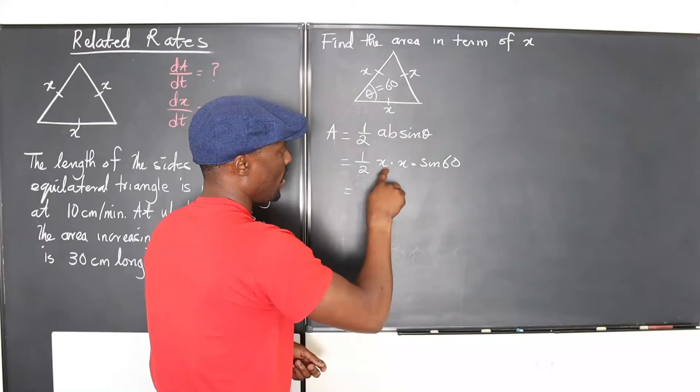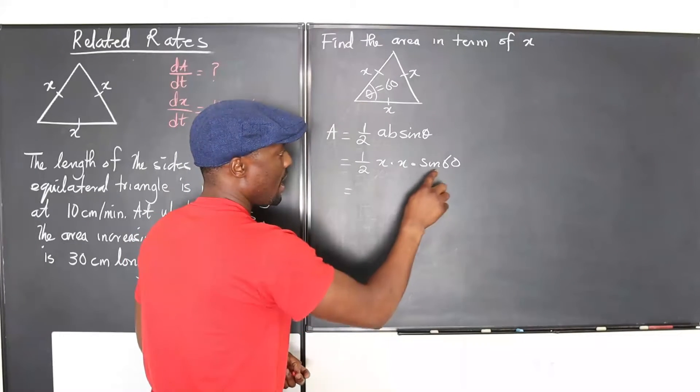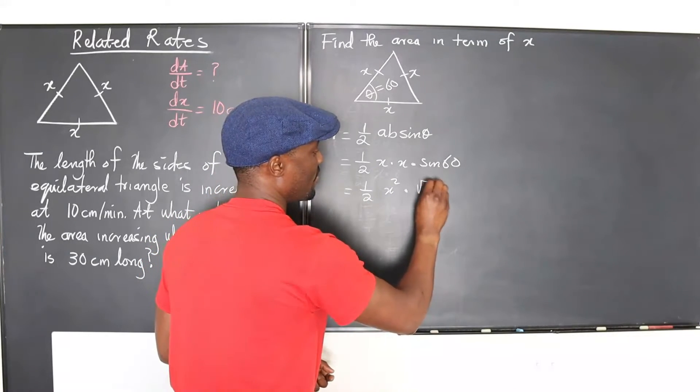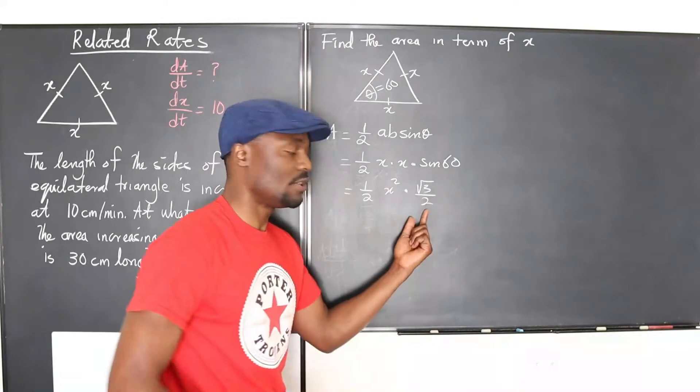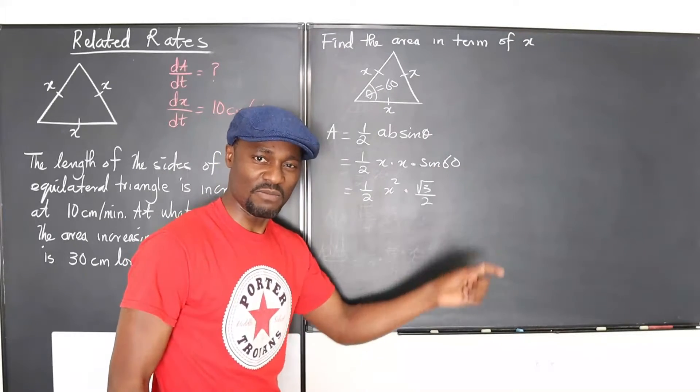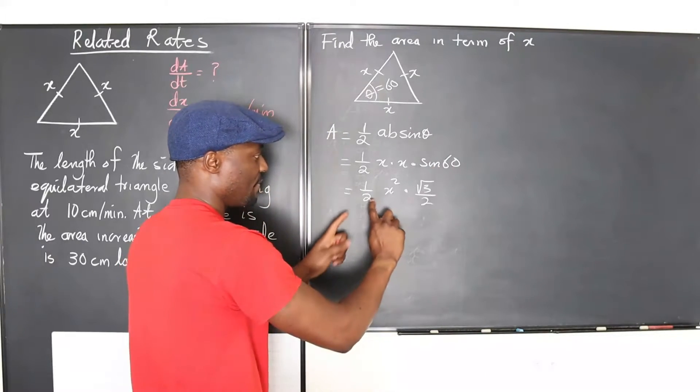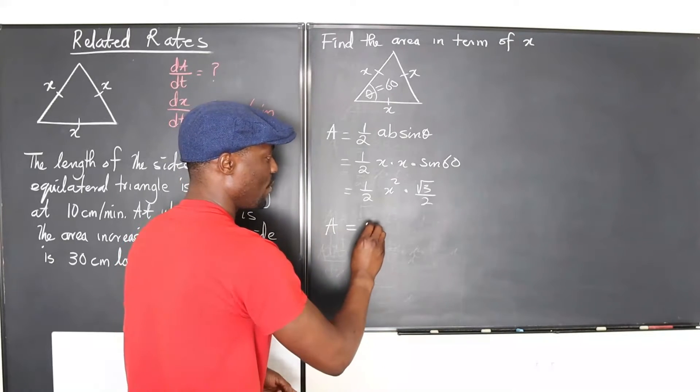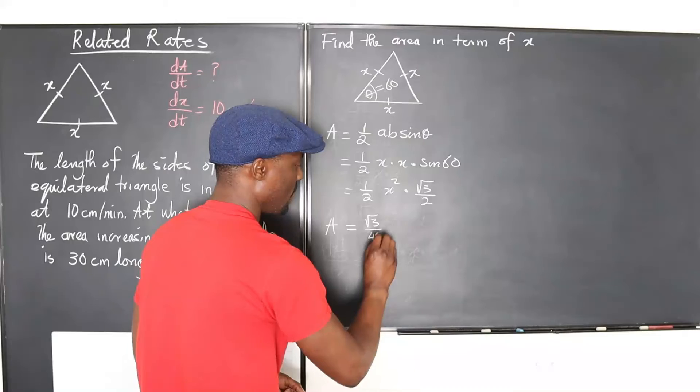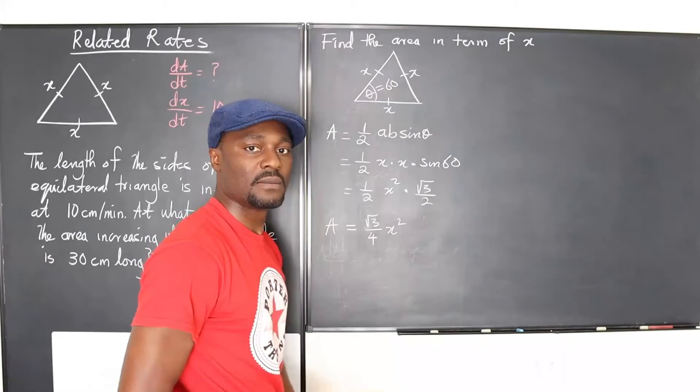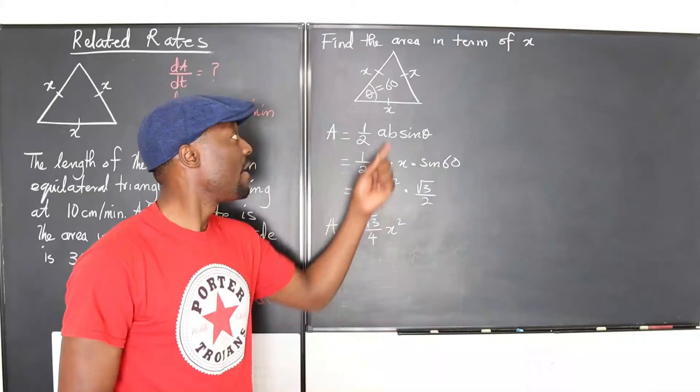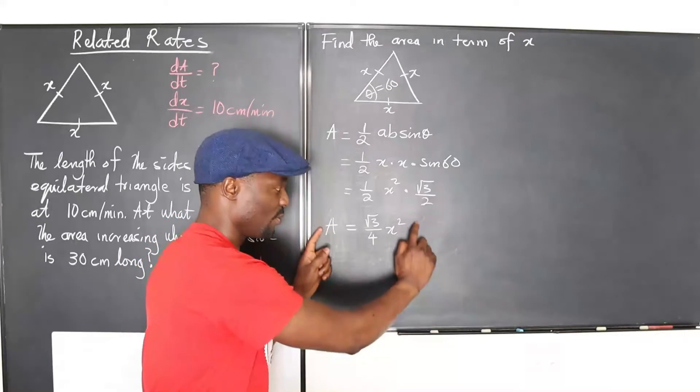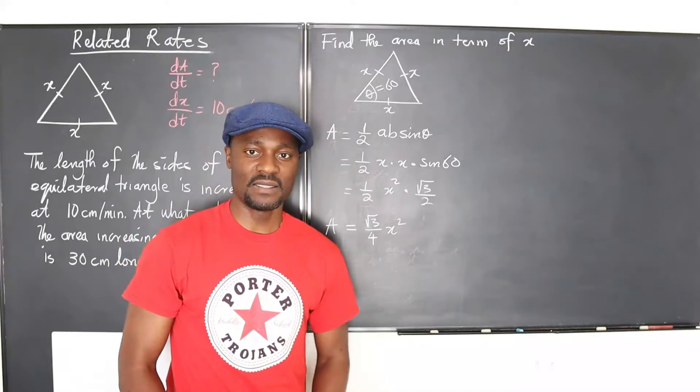That would be equal to - we know x times x, so what is sine 60? One half of x squared times root 3 over 2. You need to know this also. This is something you must know at this point. If we multiply these together, you'll end up with A being equal to root 3 over 4 x squared. This is the area of any equilateral triangle, all equilateral triangles. You just need to plug in what x is.